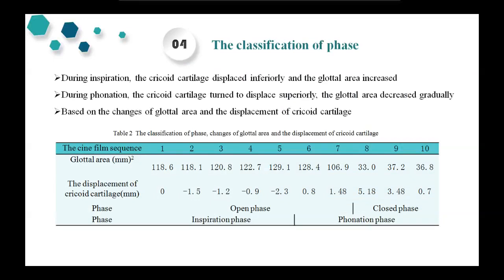We found that during inspiration, the arytenoid cartilage displaced inferiorly and the glottal area increased gradually. During phonation, the arytenoid cartilage turned to displace superiorly and the glottal area was at its smallest. Combining the displacement of the arytenoid cartilage and the glottal area, we identified the turning point between inspiration and phonation. Taking subject 1 as an example, the first through fifth frames were the inspiration process. The fifth frame was the maximally inspired position. The sixth through tenth frames were the phonation process.